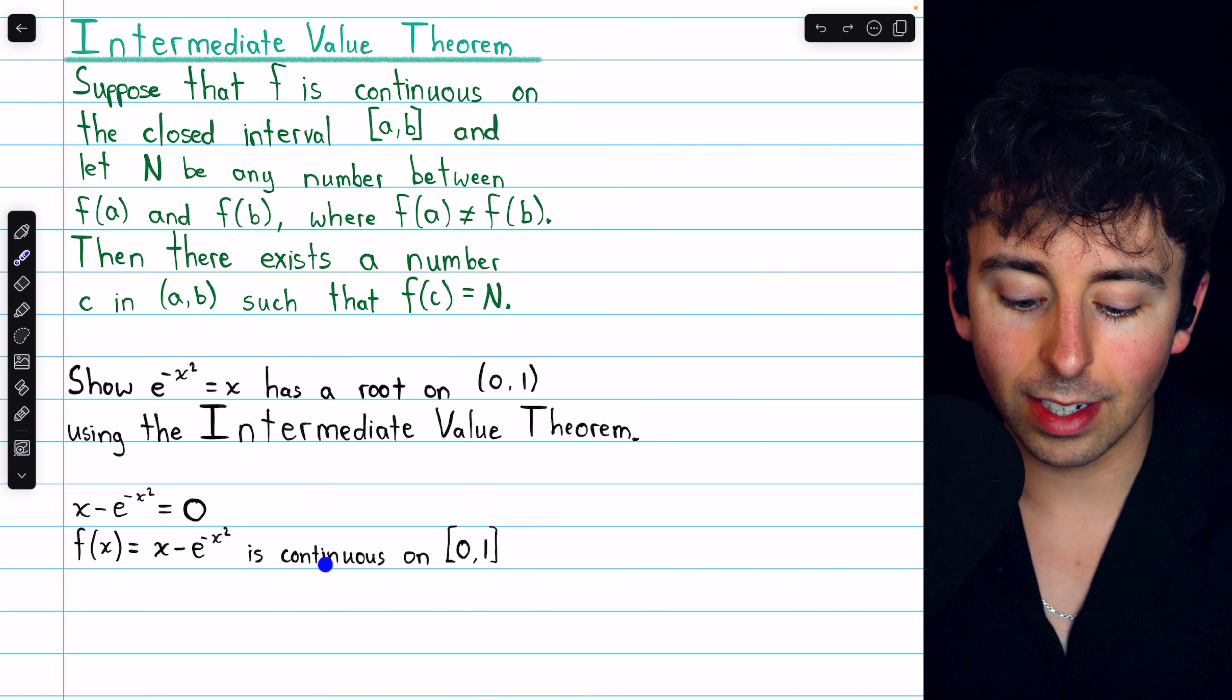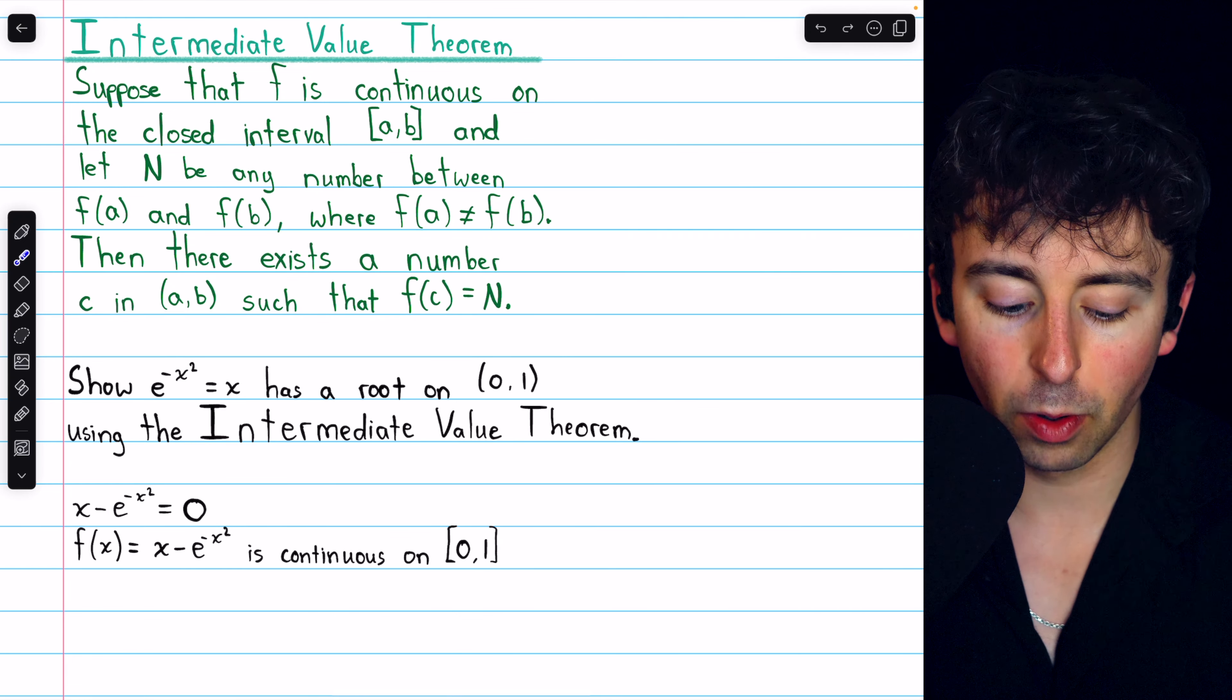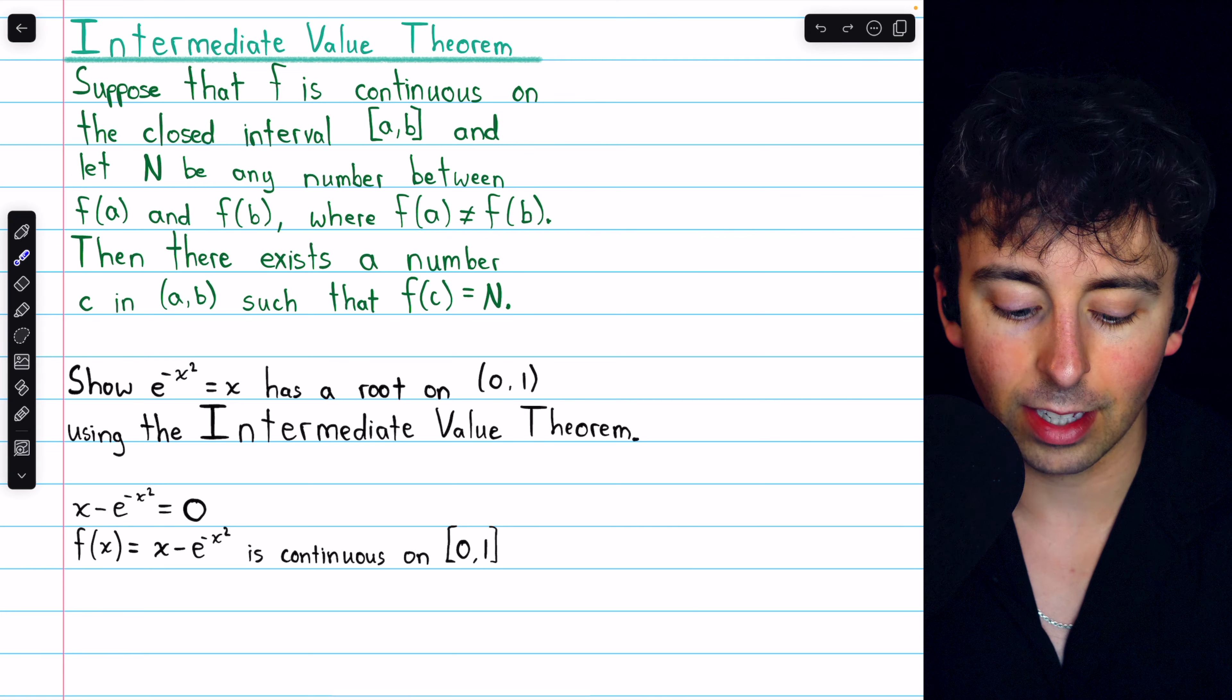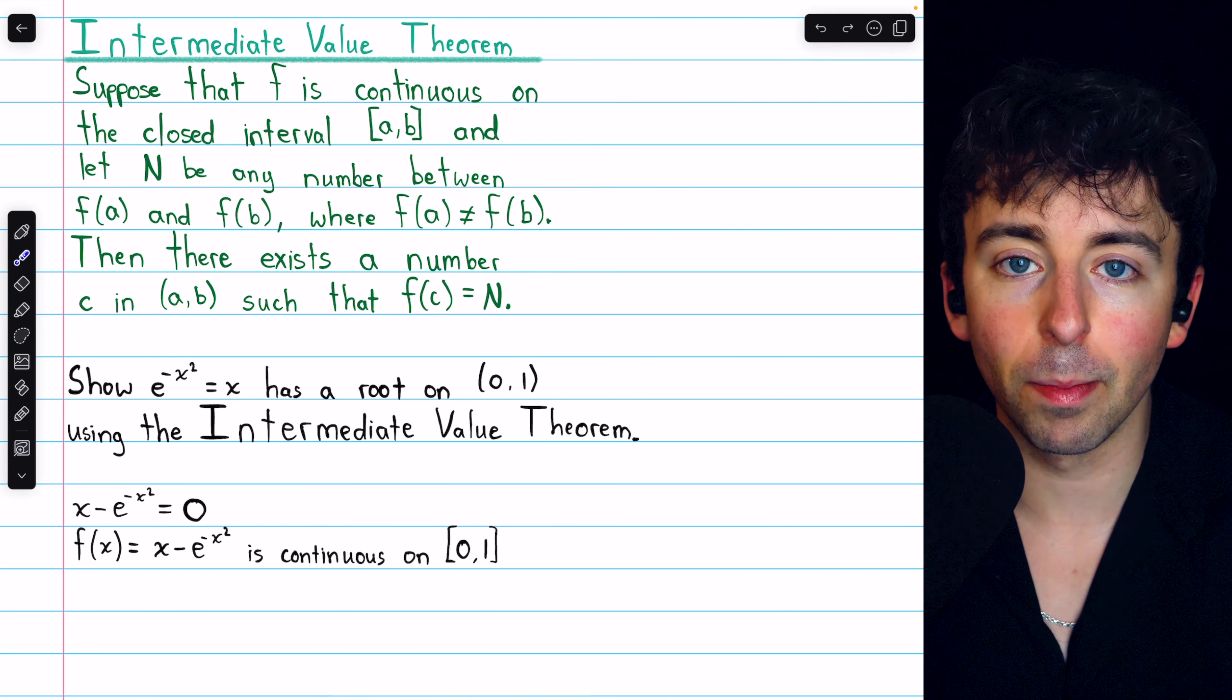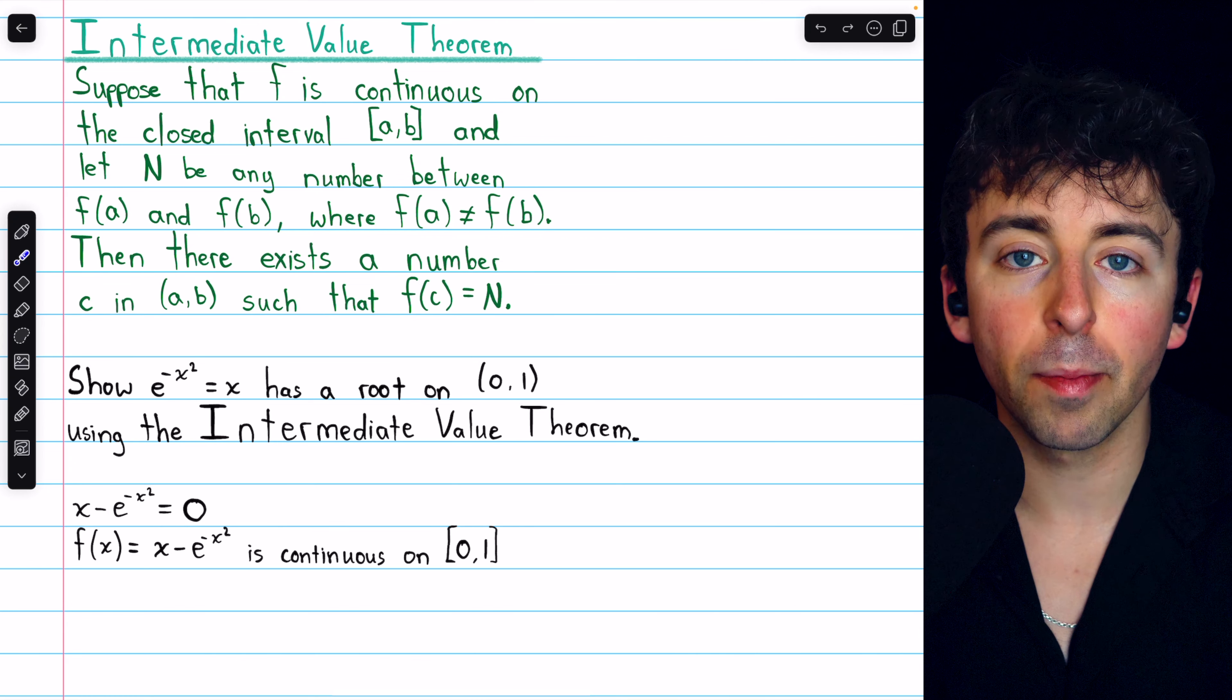Now this function we know is continuous on the closed interval from 0 to 1, because x and e to the negative x squared are continuous on all real numbers. So we can apply the Intermediate Value Theorem.